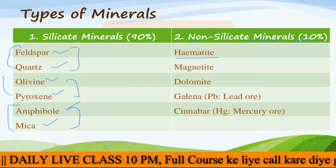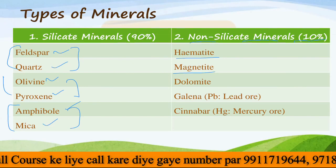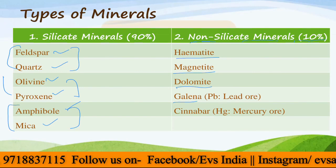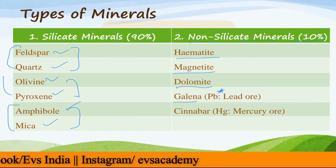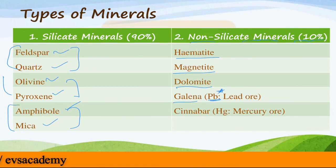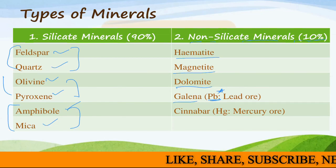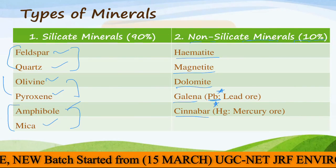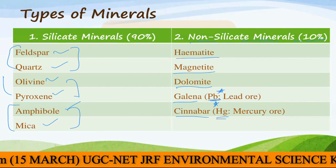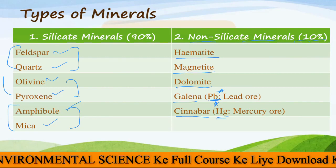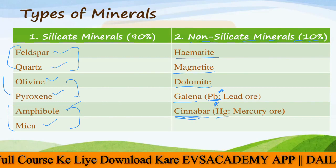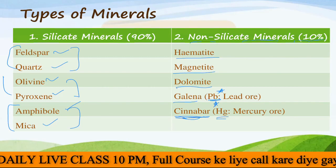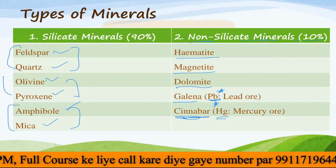Non-silicate minerals contribute only 10% of all minerals on the earth's surface. Examples include hematite (an ore of iron, FeO), magnetite (Fe2O3), dolomite (calcium and magnesium carbonate), galena (the ore of lead, used to obtain lead for industrial purposes), and cinnabar (the ore of mercury, widely used in thermometers). Cinnabar is also a type of non-silicate mineral.